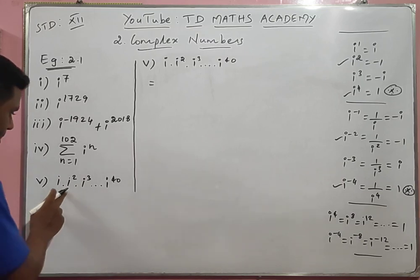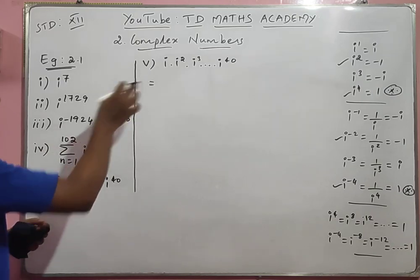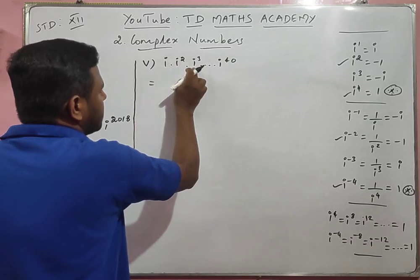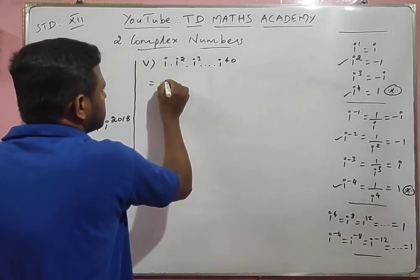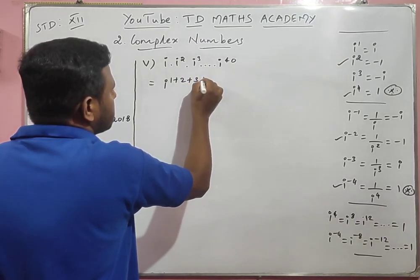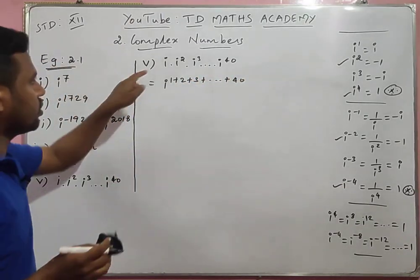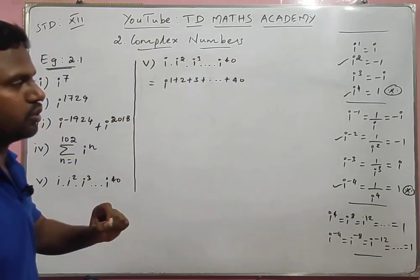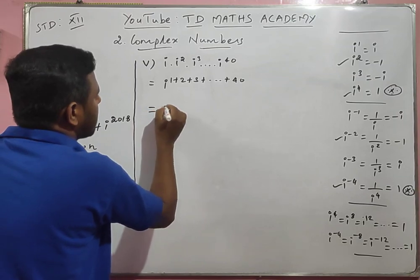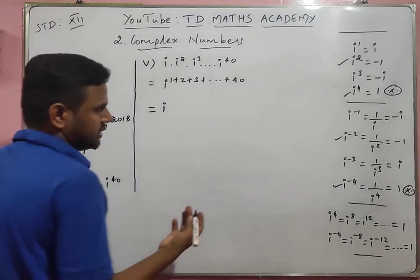For the product i times i^2 times i^3 ... times i^40, use the rule that when the base is equal we add the powers. So this equals i power (1 + 2 + 3 + ... + 40).